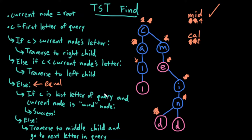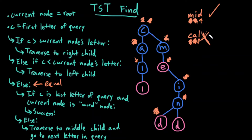If my current letter is the last letter of the query — oh yes it is — and the current node is a word node. My current node is not a word node, so that's false, I go to the else. There are no other letters in my query, so I can't do this. This is impossible, therefore I failed. So 'cow' does not exist in this ternary search tree — because 'cal' is in the tree but 'cow' is not a word node.